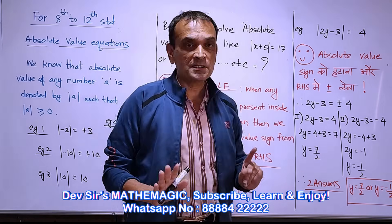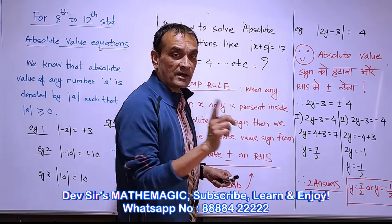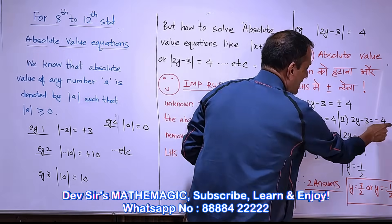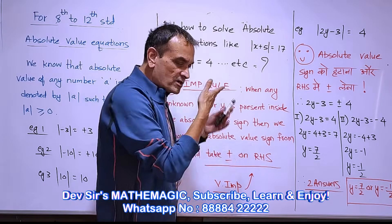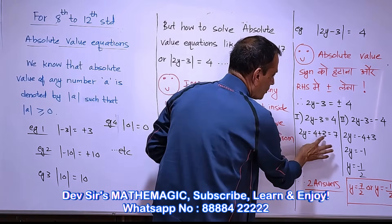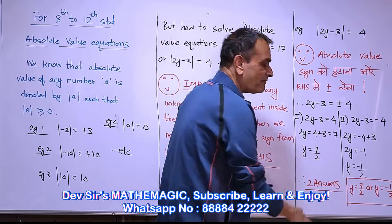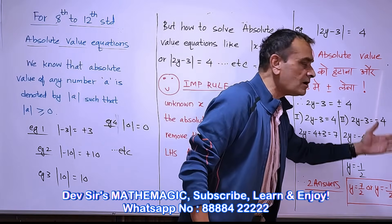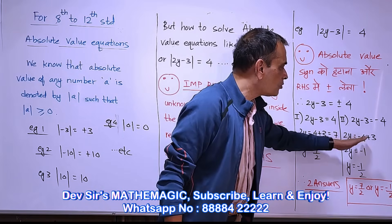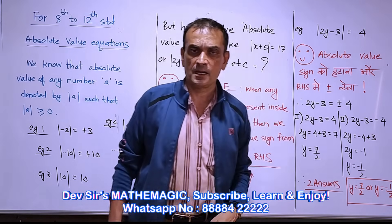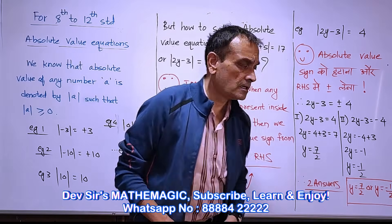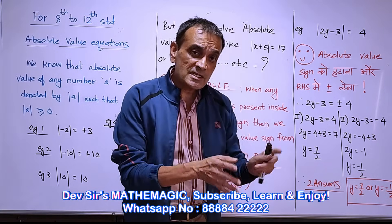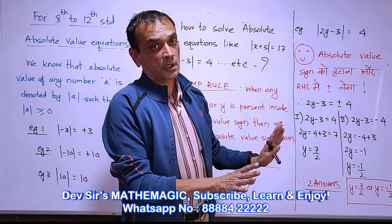You have to take both plus or minus. So Case 1: 2y minus 3 equals plus 4, giving 2y equals 7, so y equals 7/2. Case 2: 2y minus 3 equals minus 4, giving 2y equals minus 1, so y equals minus 1/2. Answer is complete. This is a simple but important rule.